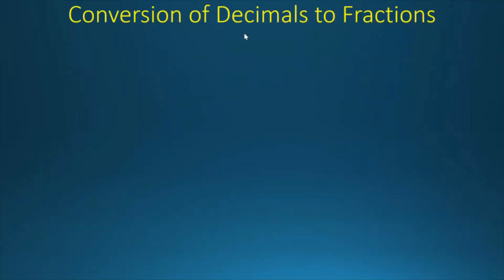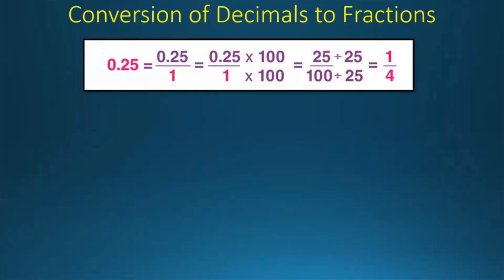First we will learn about conversion of decimals into fractions. Here we have a decimal 0.25. We will first convert 0.25 and make it 0.25 by 1, which is a decimal into a fraction. This is only one step, but if you want to convert it to a real fraction which is like 1 by 4 or 1 by 2, then we need to convert it into a fraction like this.